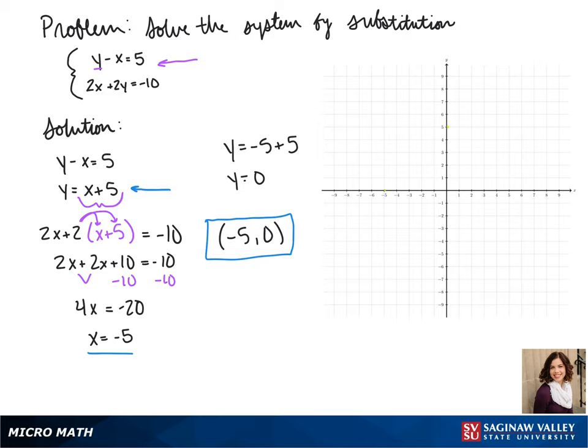Since our other equation is in standard form, we can find the x-intercept and the y-intercept, and plot those. Our intercepts are negative 5 and negative 5, and we connect those.